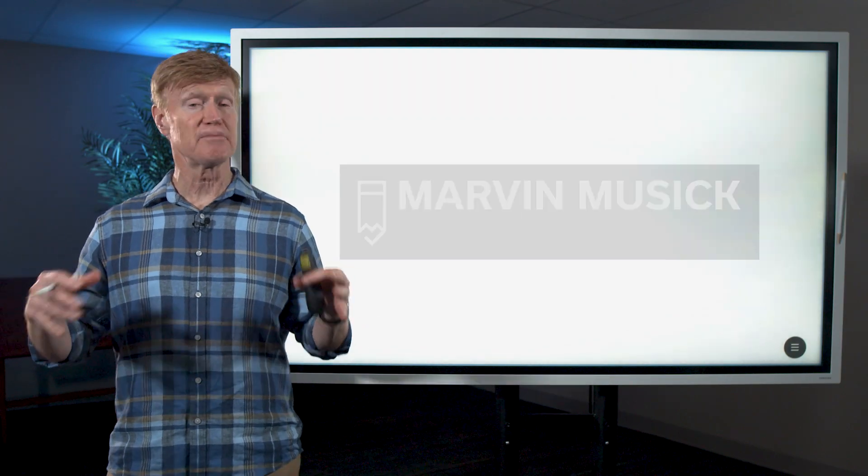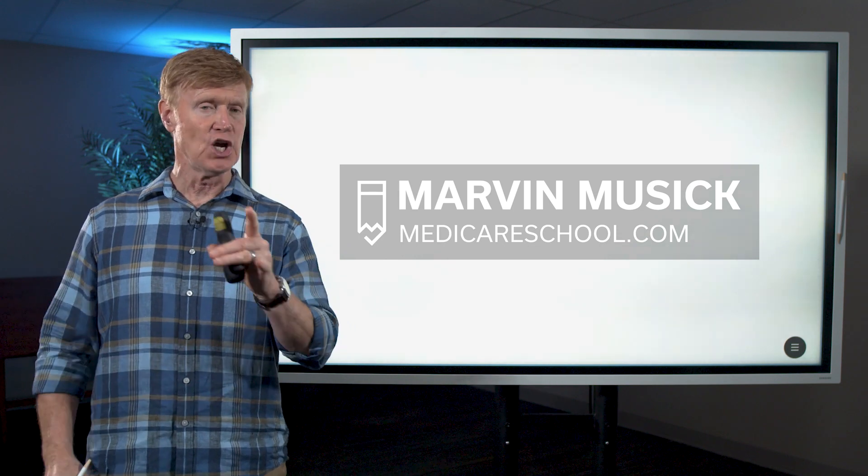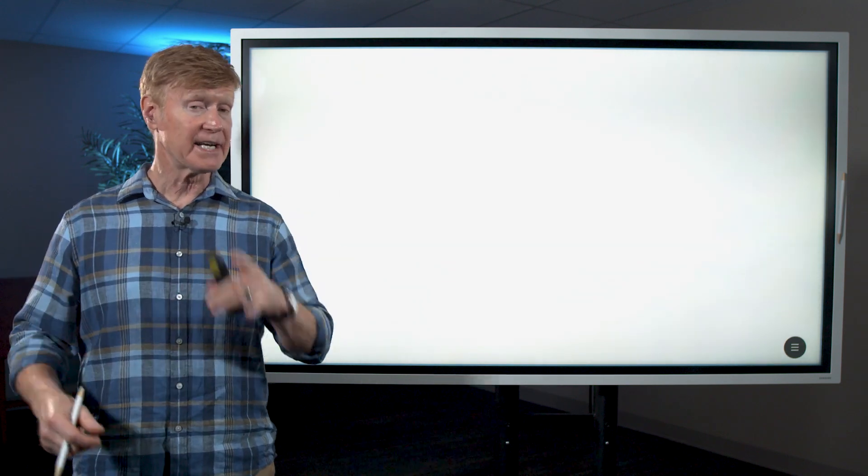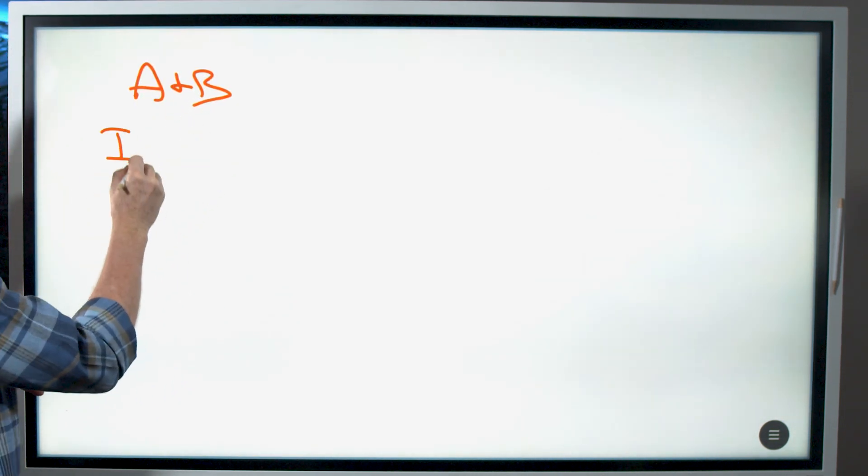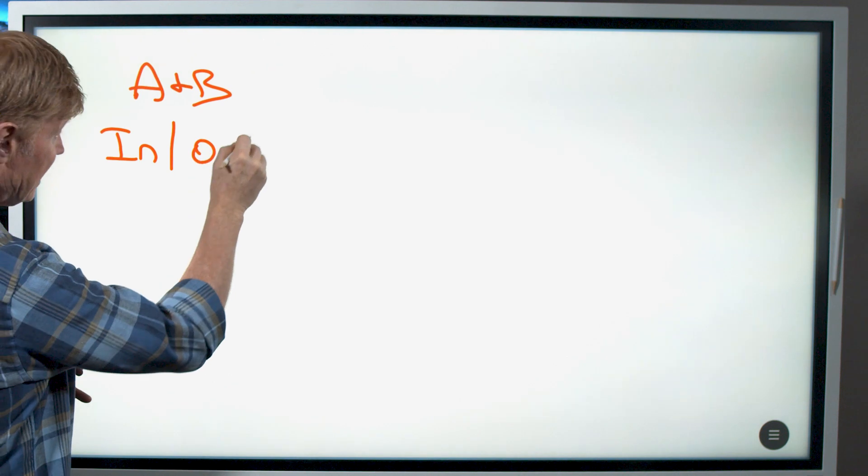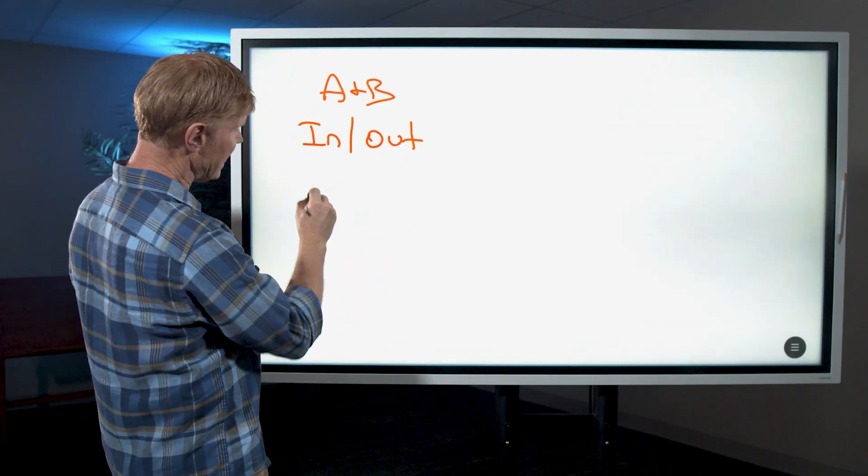Now there's a couple different ways in which our medications are administered, and depending upon how you receive those medications will determine what part of Medicare is going to pay. So Medicare A and B will actually pay for medications that you have inpatient and outpatient, so they're going to help cover those expenses as well as any kind of medication that is administered with durable medical equipment.